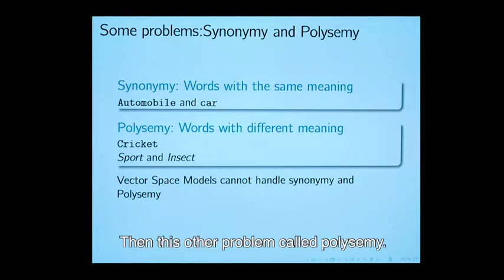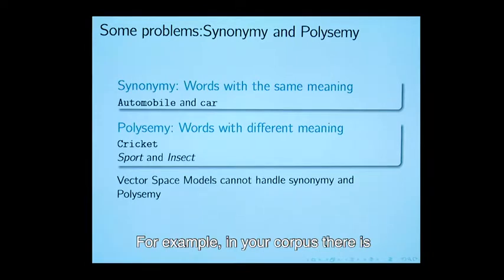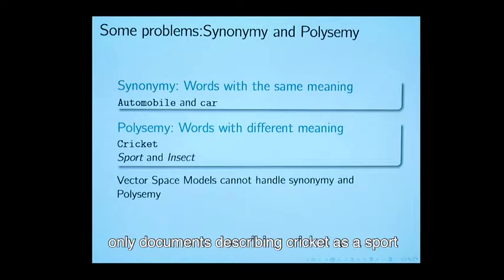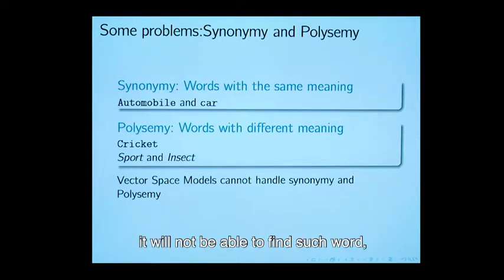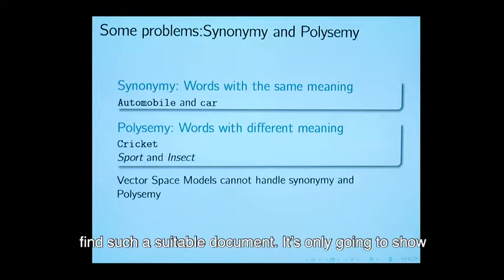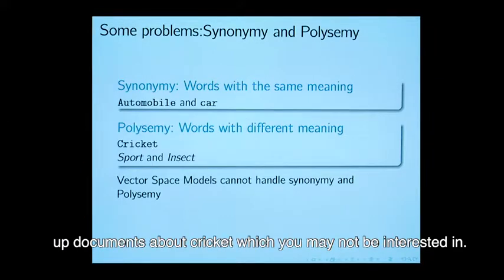Then there is another problem called polysemy. For example, in your corpus there is only three documents describing cricket as a sport. Suppose you are interested in cricket the insect, it will not be able to find such suitable documents. It is only going to show up documents about cricket which you may not be interested in.